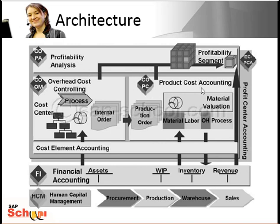Then you have COPC, Product Cost Accounting. COPC posts the costs for producing goods and services and in certain cases also their sales revenues to FI or to Profitability and Sales Accounting. Then you have Profitability and Sales Accounting, which has two components: COPA and PCA.